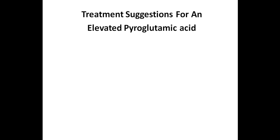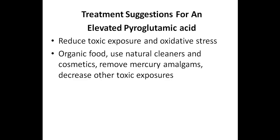So let's jump into the treatment suggestions for the elevated markers, starting with treatment suggestions for an elevated pyroglutamic acid. Of course you want to try to do everything to reduce toxic exposures as well as oxidative stress, and you can accomplish this by eating mostly organic foods. You want to try to use natural cleaners and cosmetics. If you have mercury amalgams, you would want to consider removing these as well as decrease other toxic exposures.